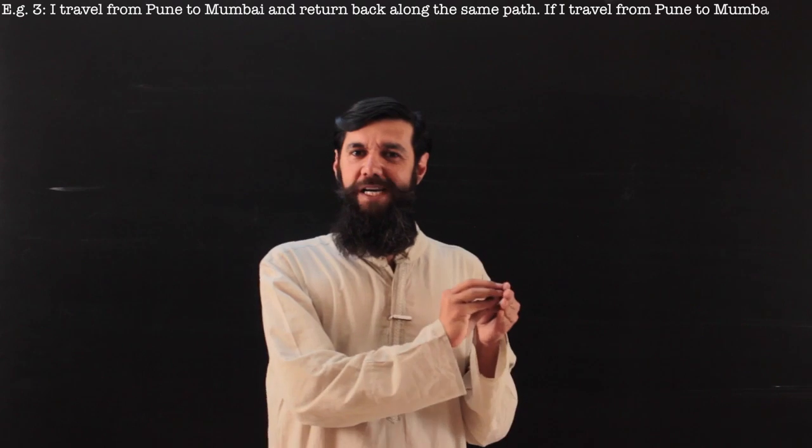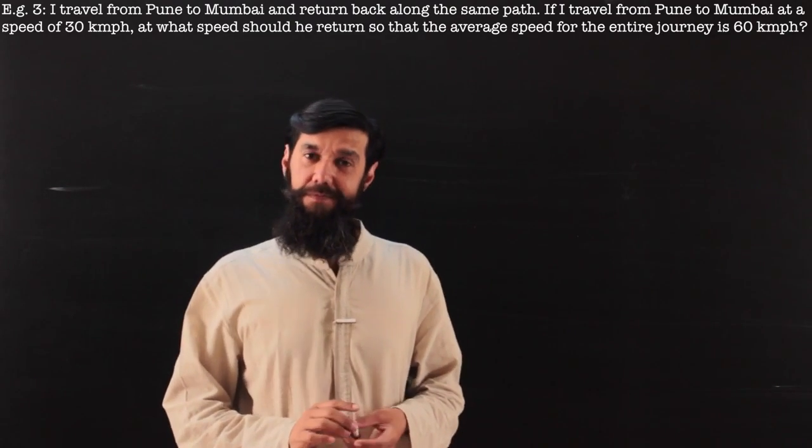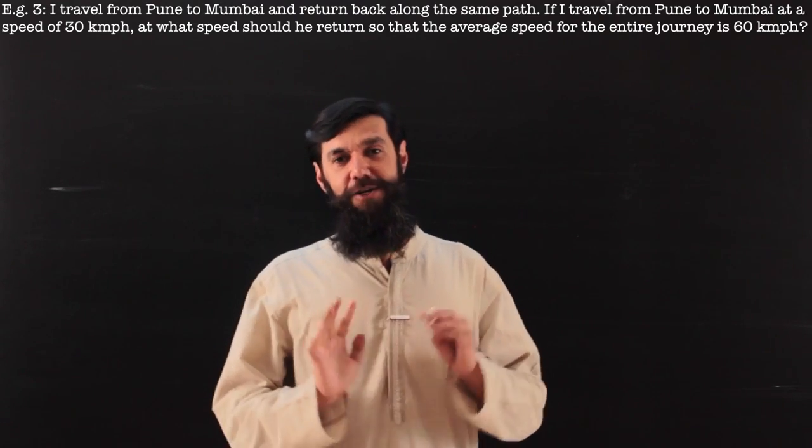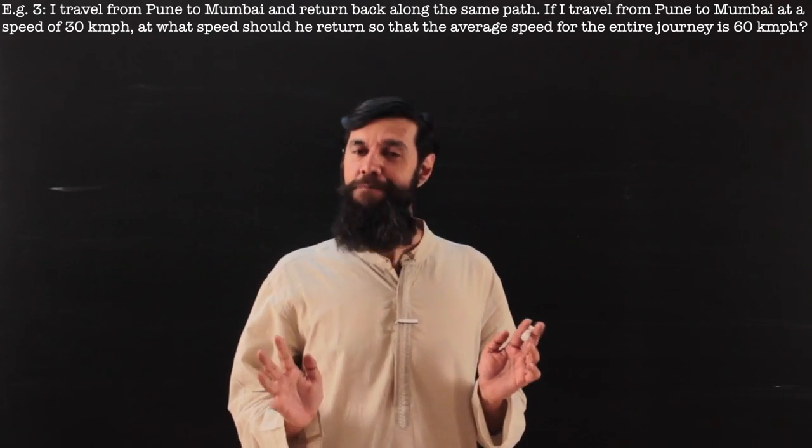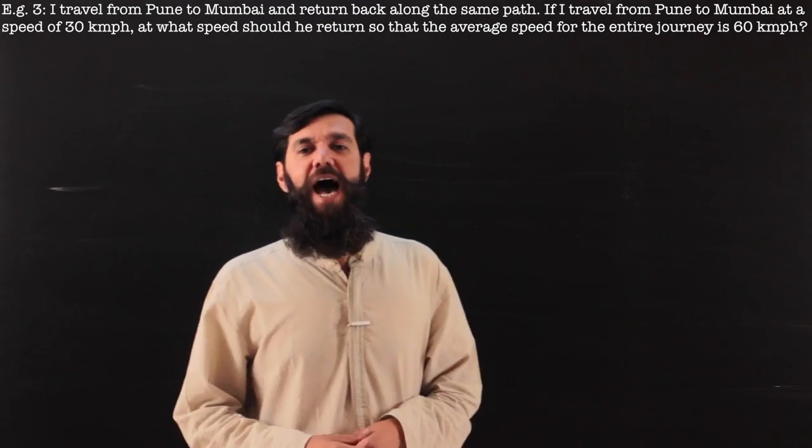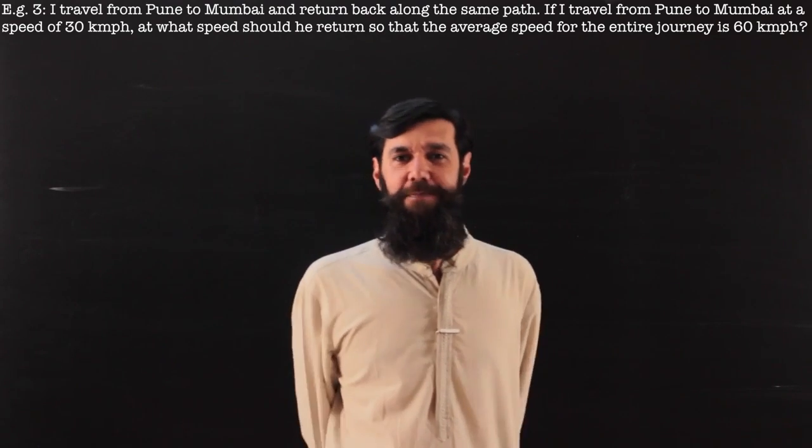Example reads: I have to travel from Pune to Mumbai and return back along the same path. If I go from Pune to Mumbai at the speed of 30 kilometers per hour, at what speed should I return so that the average speed for the entire journey is 60 kilometers per hour?